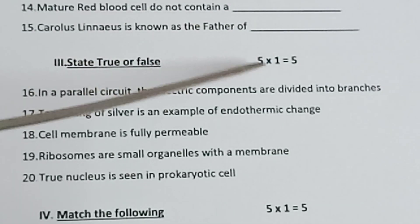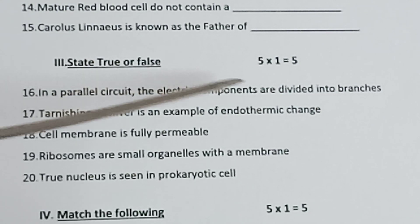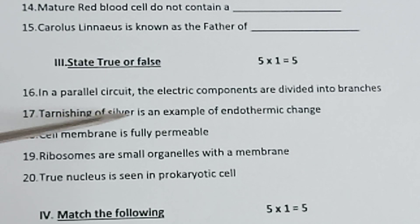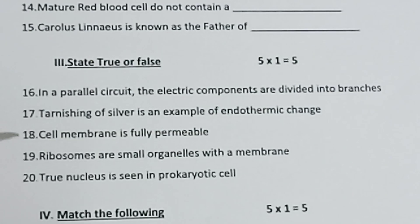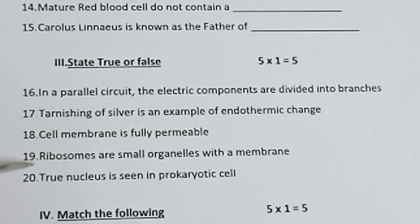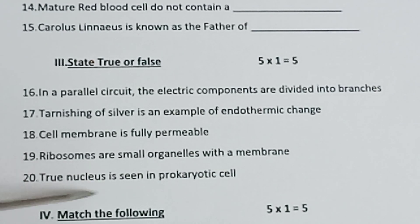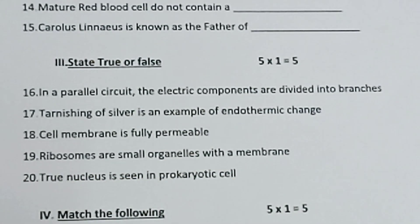Roman numeral three: State true or false. 5 into 1 is equal to 5. Sixteen: In a parallel circuit, the electric components are divided into branches. Seventeen: Tarnishing of silver is an example of endothermic change. Eighteen: Cell membrane is fully permeable. Nineteen: Ribosomes are small organelles with a membrane. Twenty: True nucleus is seen in prokaryotic cell.